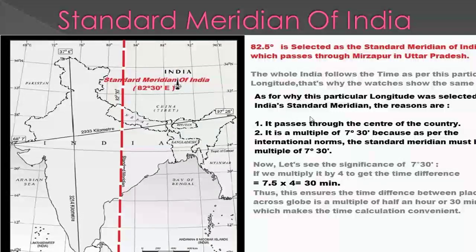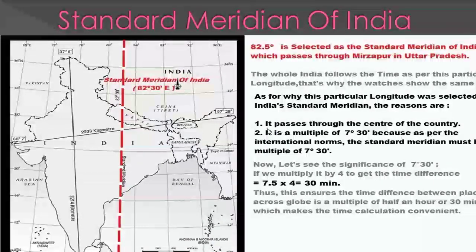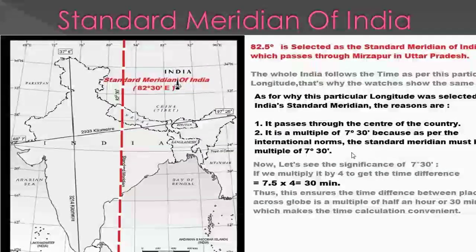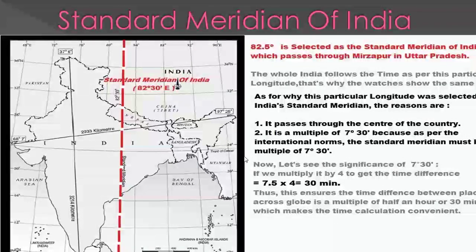As for why this particular longitude was selected as India's standard meridian, the reasons are: first, it passes through the center of the country; and second, it is a multiple of 7.5 degrees, because as per international norms, the standard meridian must be a multiple of 7.5 degrees.